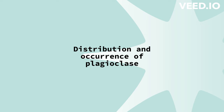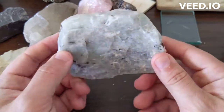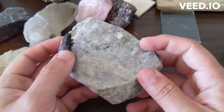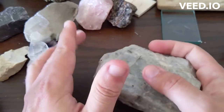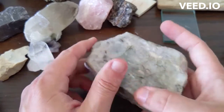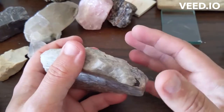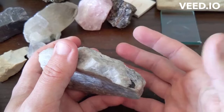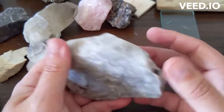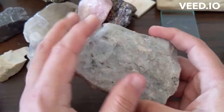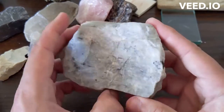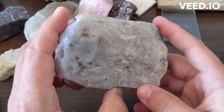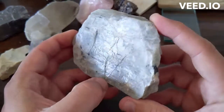Plagioclase feldspars are more widely distributed than alkali feldspars. The classification of igneous rocks is to a large extent based on the proportions of plagioclase to alkali feldspars. Among volcanic rocks, plagioclase is essential in, for example, basalt — the most common rock type of all ocean floors, usually below a thin layer of sediments called pelagic sediments.